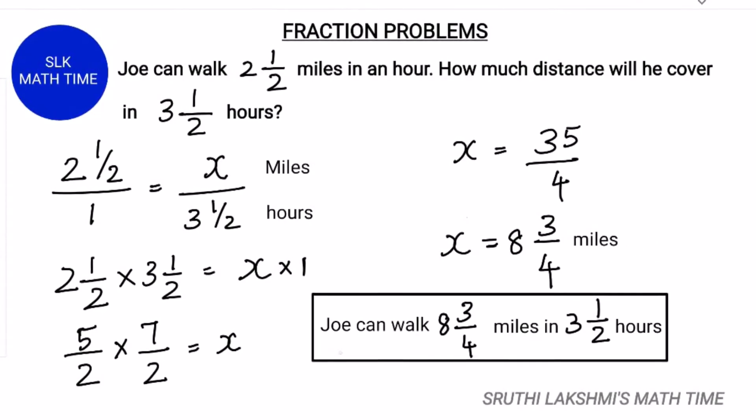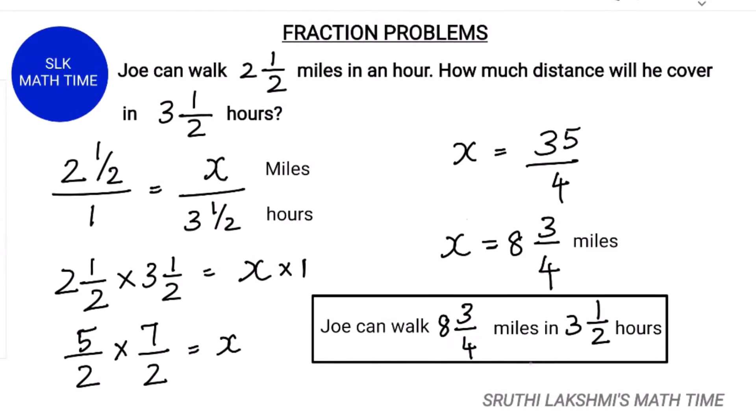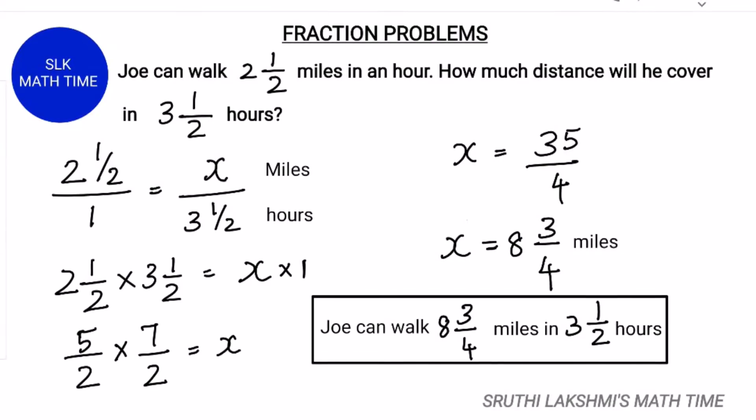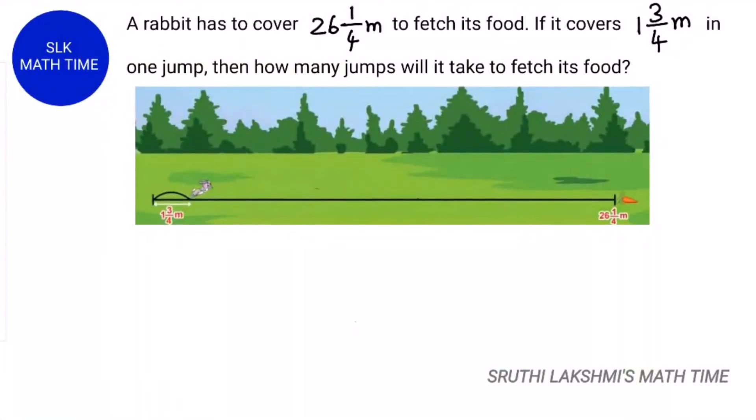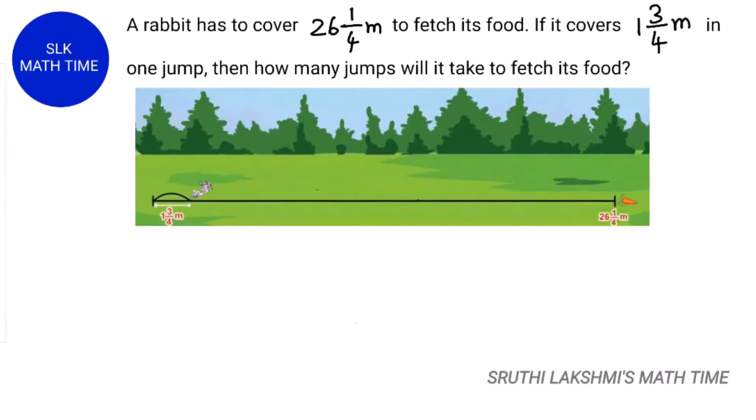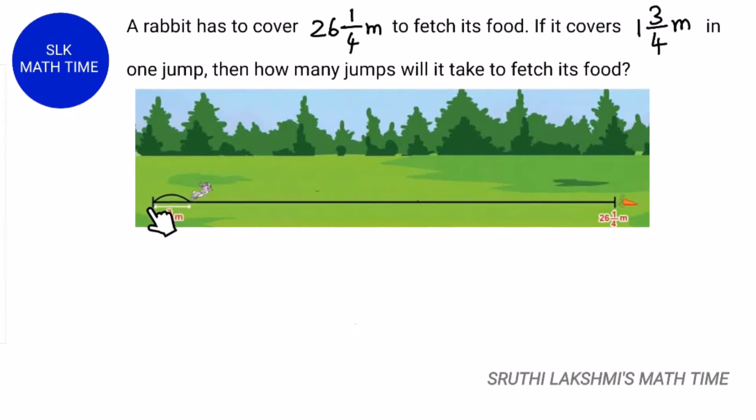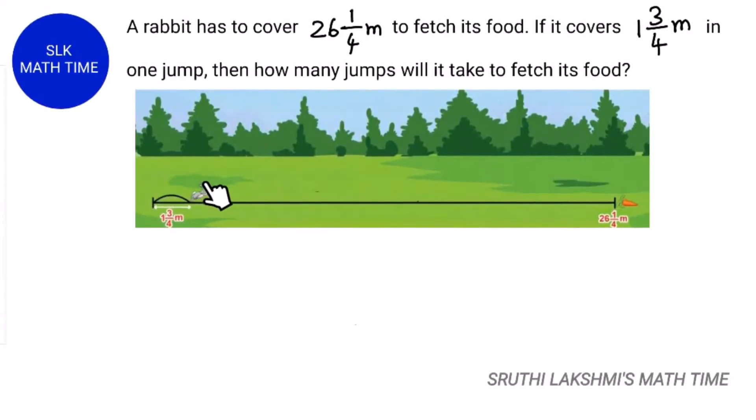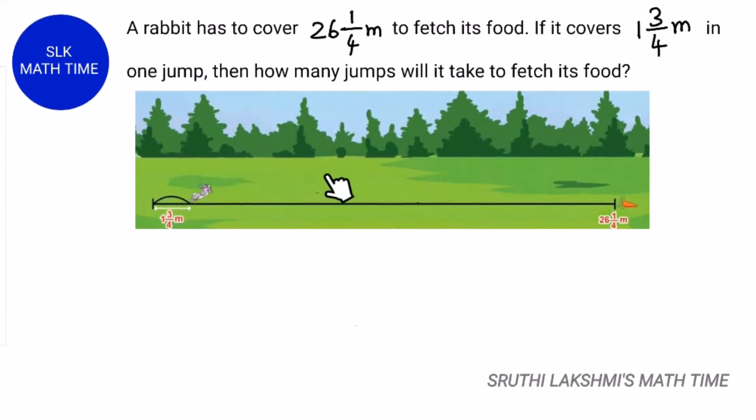A rabbit has to cover 26 1 by 4 meters to fetch its food. If it covers 1 3 by 4 meters in one jump, how many jumps will it take to fetch its food?